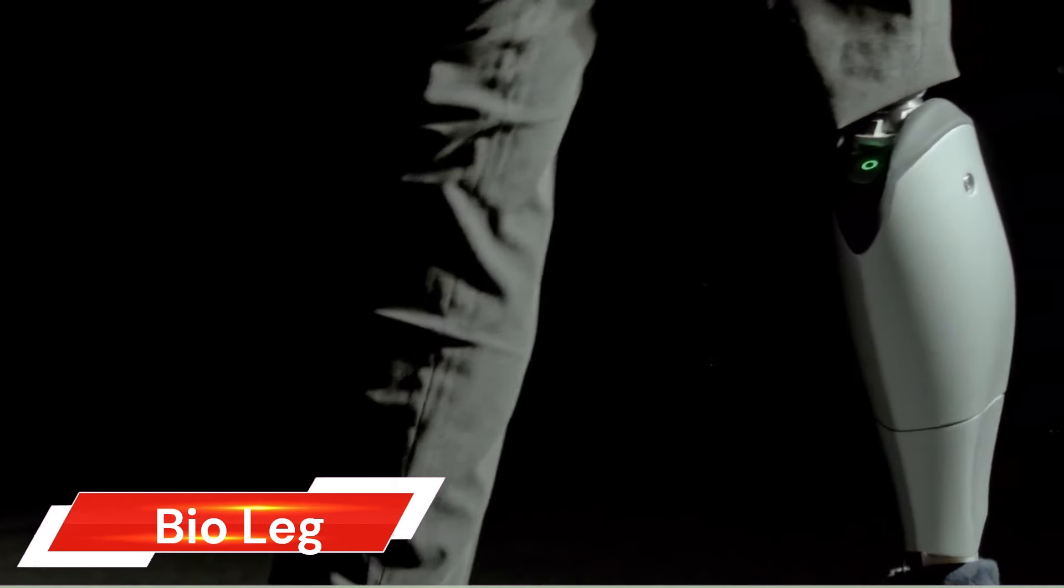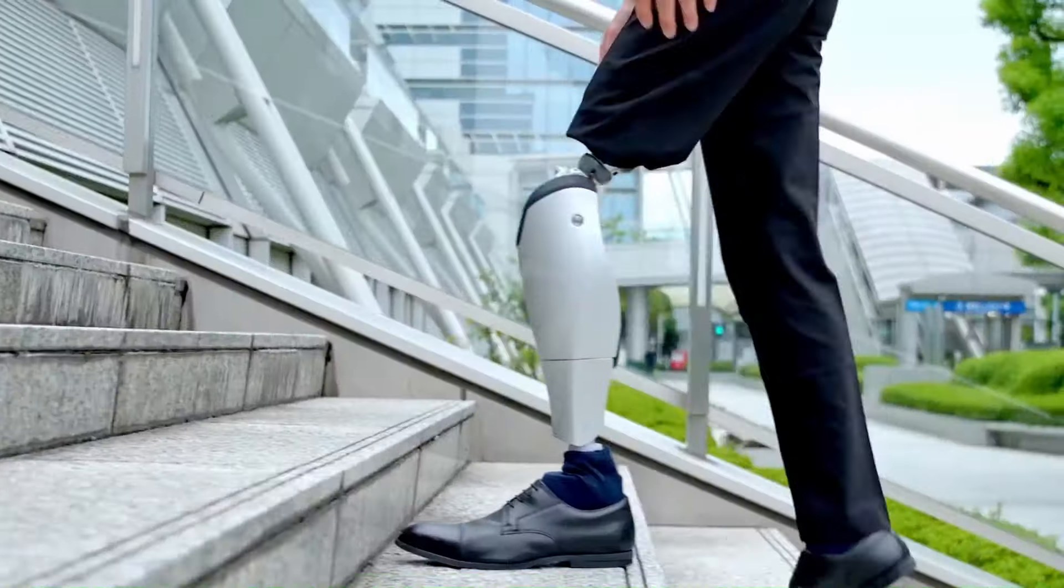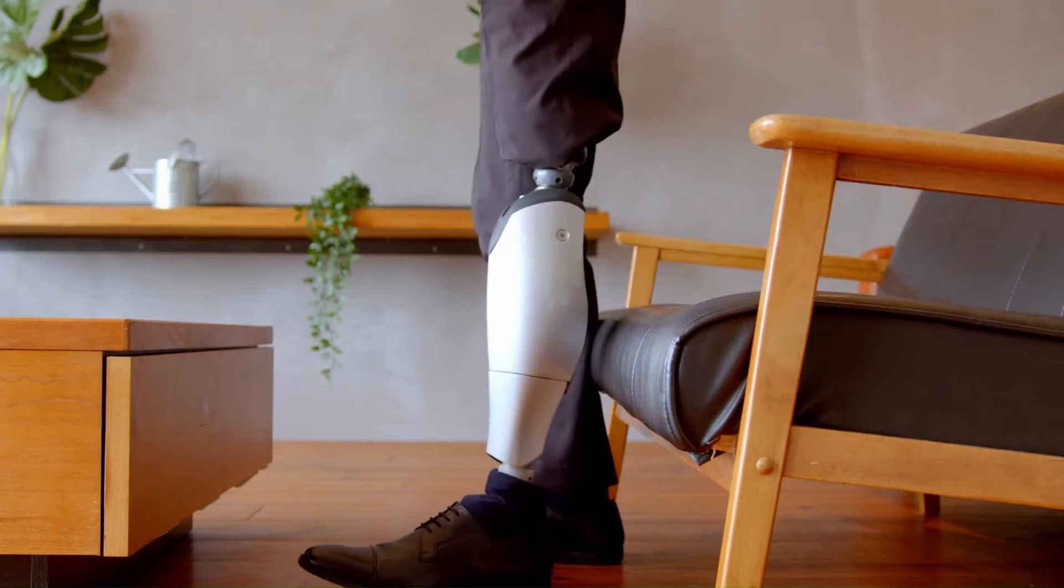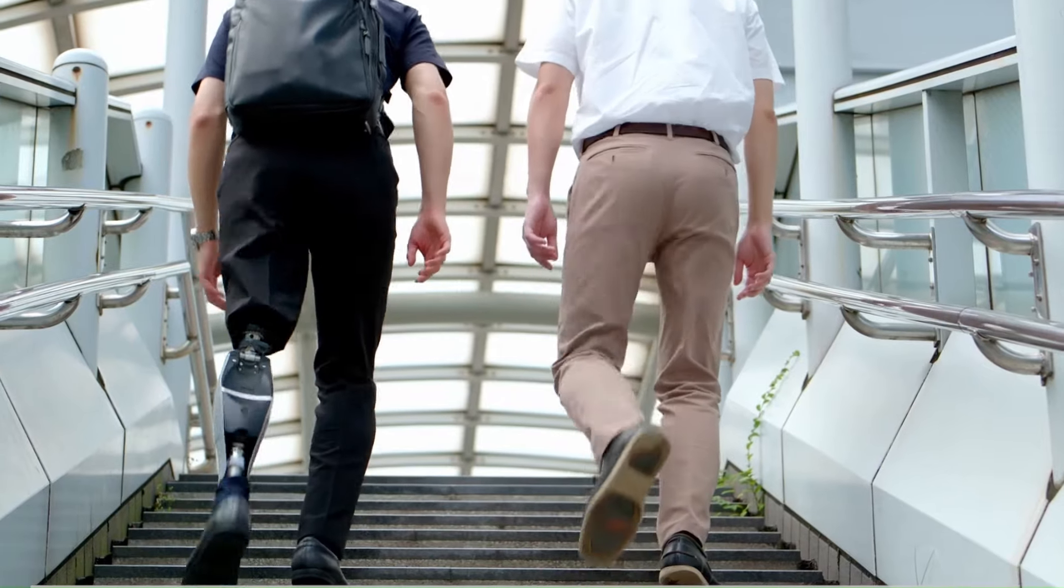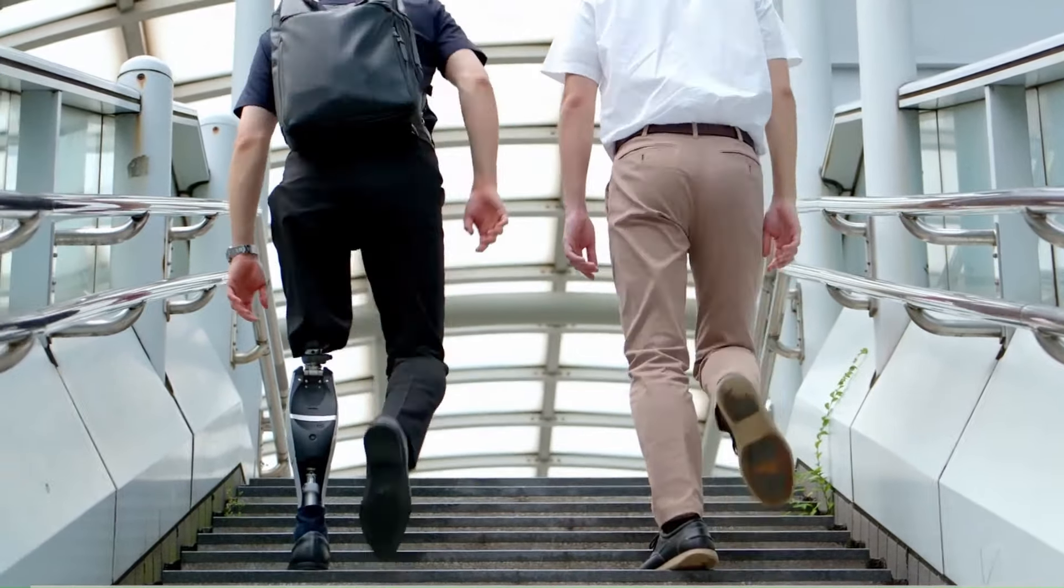BioLeg. The BioLeg is a type of bionic prosthetic leg developed by Bionic M, a Tokyo-based company. It's designed to be more natural and intuitive to use than traditional prosthetics, thanks to its motor-powered microprocessor knee that mimics the movement of a human leg.